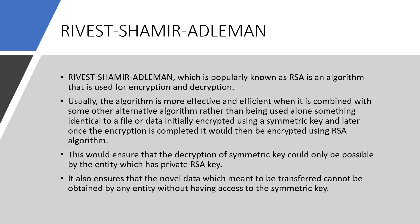A file or data is initially encrypted using a symmetric key, and once that encryption is completed, it is then encrypted using RSA as a second encryption layer. This ensures that decryption of the symmetric key is only possible by the entity which holds the private RSA key — providing secure transmission and secure decryption. It also ensures that the data meant to be transferred cannot be obtained by any entity without access to the symmetric key.